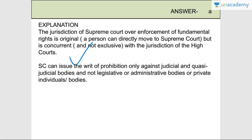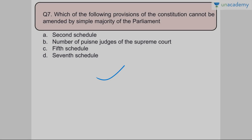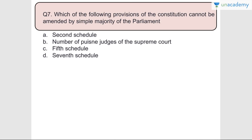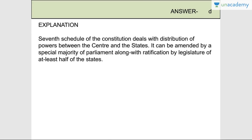Question number seven: Which of the following provisions of the Constitution cannot be amended by a simple majority of the Parliament? The seventh schedule of the Constitution deals with the distribution of powers between the center and states. Answer is D - it can be amended by a special majority of Parliament along with ratification by the legislature of at least half of the states.